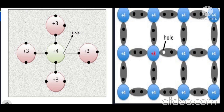A trivalent impurity atom — say an indium atom — which has three valence electrons, when such an atom is added into the silicon crystal, this atom replaces one of the silicon atoms and settles in the lattice site of the replaced semiconductor atom. This indium atom forms three covalent bonds with the neighboring three silicon atoms, and the fourth bond remains incomplete, which has a deficiency of one electron. This deficiency of an electron is called a hole. As we can also see in the figure, there is a creation of a hole, and this hole always behaves like a positively charged particle.